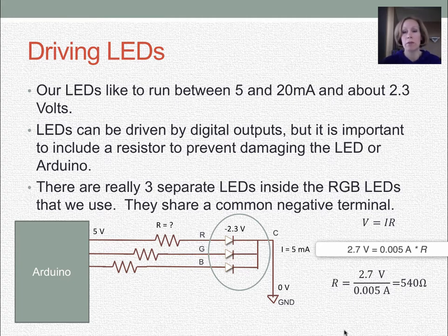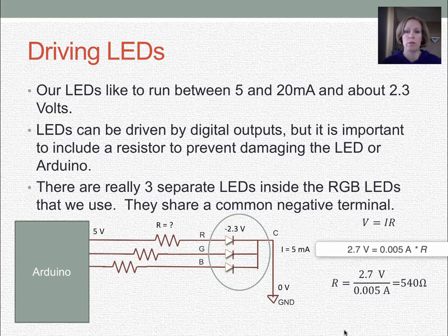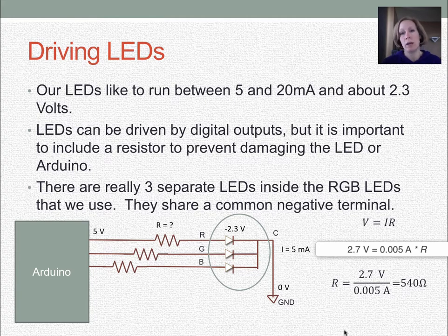We can play around with the resistance values for each RGB channel if we want to do a white balance. Some LEDs have more lumens — the green or blue ones are brighter than the red — so you can adjust those resistor values, as long as you make sure you're not putting more than 20 milliamps through any LED.